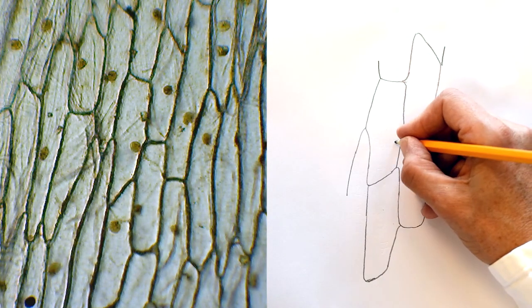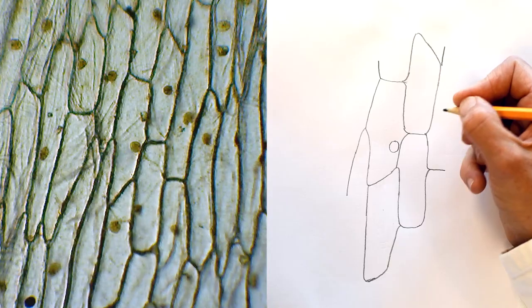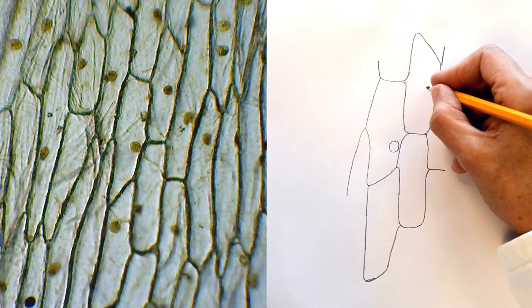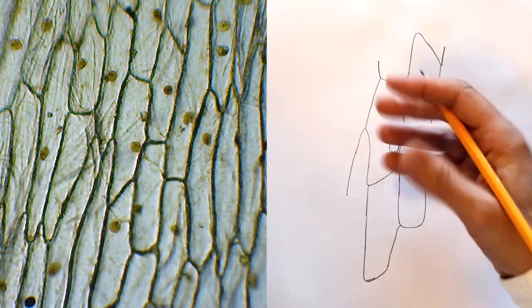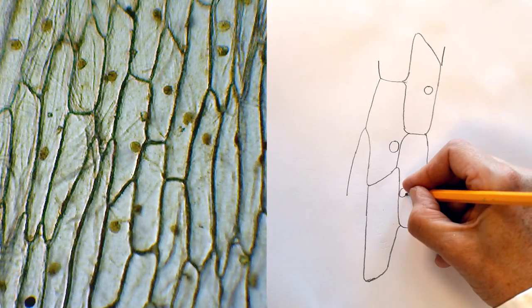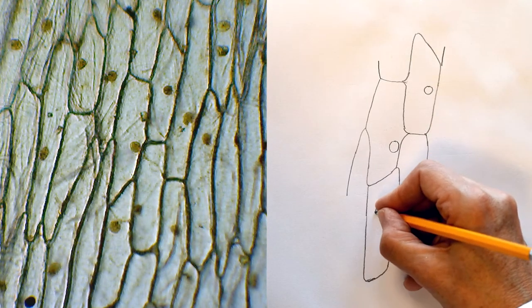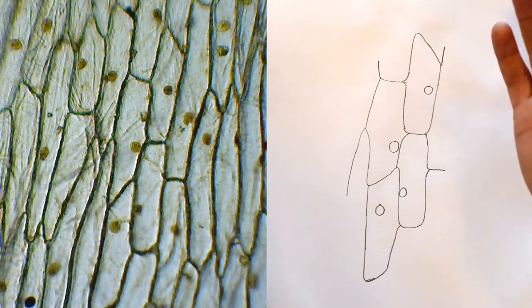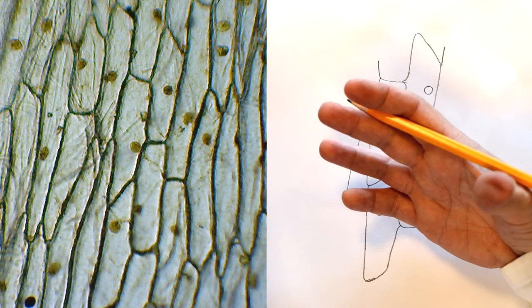Well I can see the location of the nucleuses. So I'm not going to put them in randomly, I'm going to put them in actually where I can see them down the microscope with these cells. Can I see any more detail at this magnification? No. So I'm not going to put any more detail in.